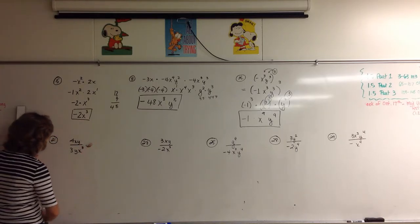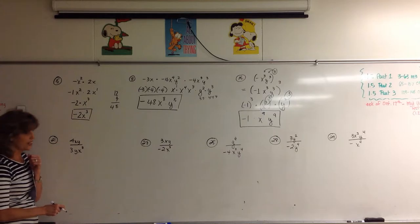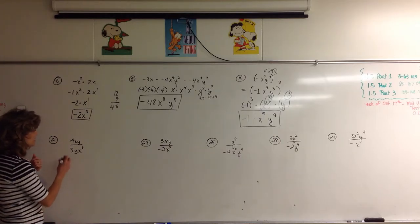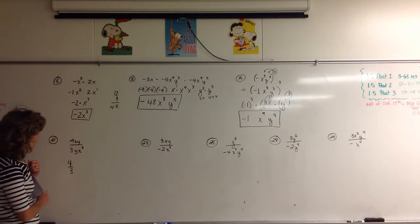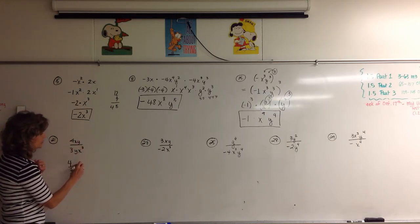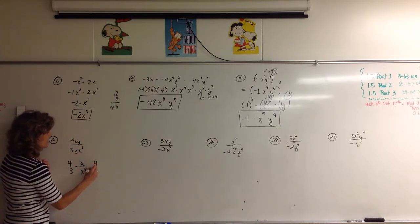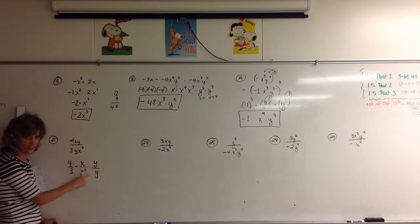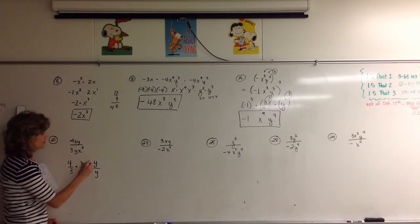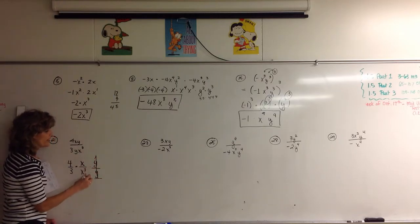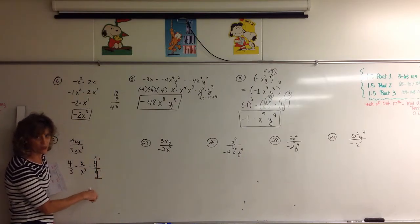On number 21, we have 4xy over 3yx to the third. When we divide, we're going to write these alphabetically. I'm going to realize this says 4 divided by 3 — I don't ever subtract numbers. I only subtract exponents when I'm dividing. So there's not a whole lot I can do with 4 divided by 3 if I don't want a decimal — I'm just going to leave it as 4 thirds. Then y on top divides with y on bottom, and anything over itself is 1.